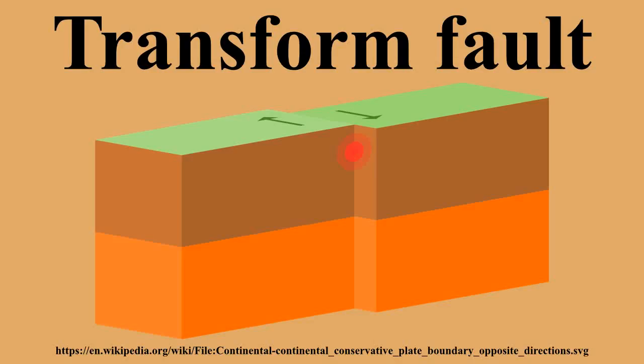Transform faults move differently than a strike-slip fault at the mid-oceanic ridge. Instead of the ridges moving away from each other like other strike-slip faults, transform fault ridges stay in the same fixed location, and the new ocean seafloor being created at the ridges is pushed away from the ridge. Evidence of this can be found in paleomagnetic striping on the seafloor. A paper theorizes that the creation of transform faults between the ridges of the mid-oceanic ridge is attributed to rotated and stretched sections of the mid-oceanic ridge.